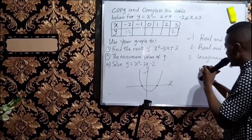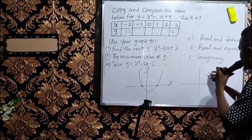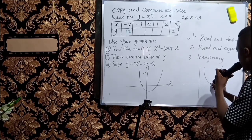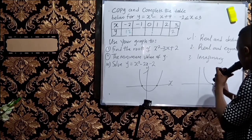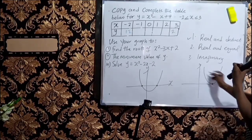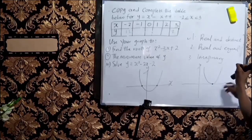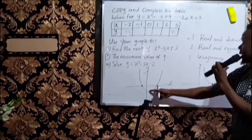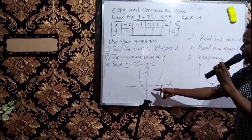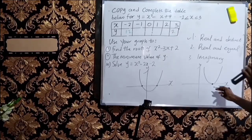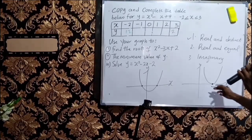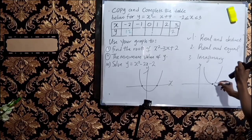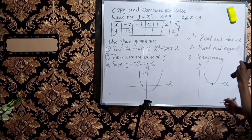Sometimes you can have a curve that looks like this. You will see that the curve is just touching the x-axis at only one point, unlike the previous one where it touches at two different points. If this happens, we say that the roots of this quadratic equation are real but equal, because they lie at the same point.